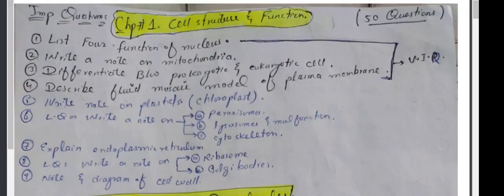And cytoskeleton. Explain endoplasmic reticulum. Write a note on ribosome and Golgi bodies. Note and diagram of cell wall. This was the first chapter's questions.